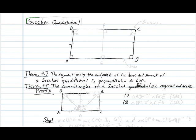In this pencast we're going to talk about theorems related to the Saccheri quadrilateral. As you recall from our introduction, the Saccheri quadrilateral consists of one line segment called a base, two line segments on the side that are congruent to one another, and then a line segment on the top, which is the summit. The angles at the base are right angles by definition, and then we have these other angles called summit angles.